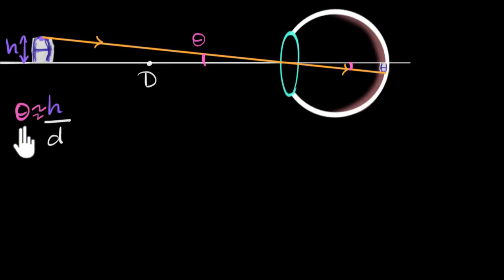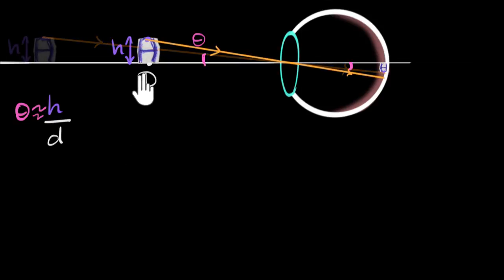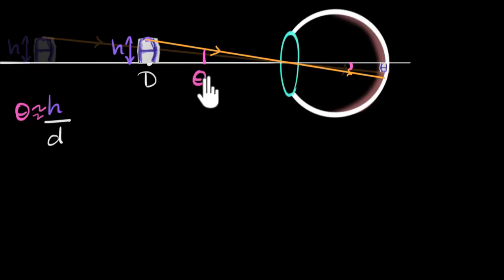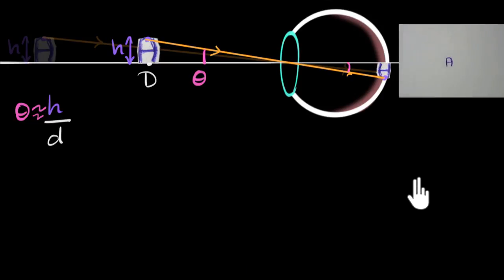If we decrease d, then theta will increase, and that's why the image size will increase. Let's bring the object all the way to point D. Now you can see that the object starts subtending a bigger angle at our eye — theta has increased — and as a result, this image also increases in size.